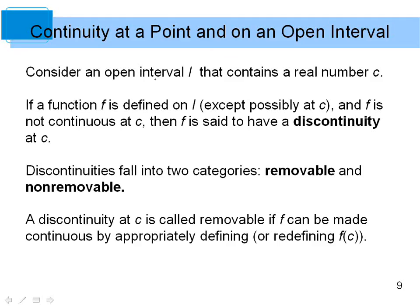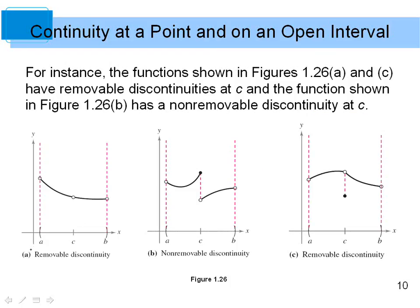If a function f is defined on an open interval l containing c, except possibly at c, and f is not continuous at c, then f has a discontinuity at c. Discontinuities fall into two categories: removable and non-removable. A discontinuity is removable if you can make the graph continuous by filling in or appropriately defining f(c).